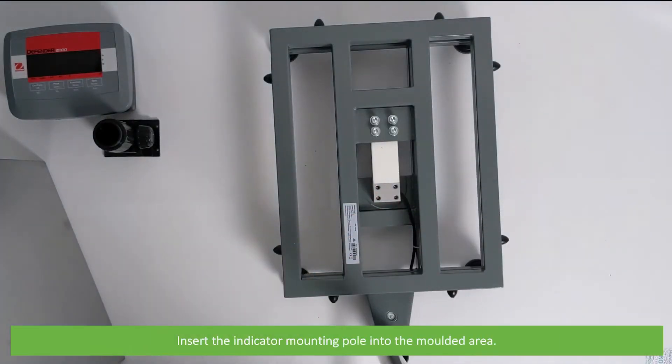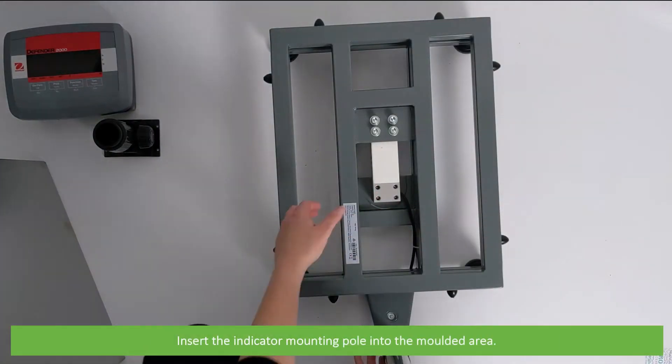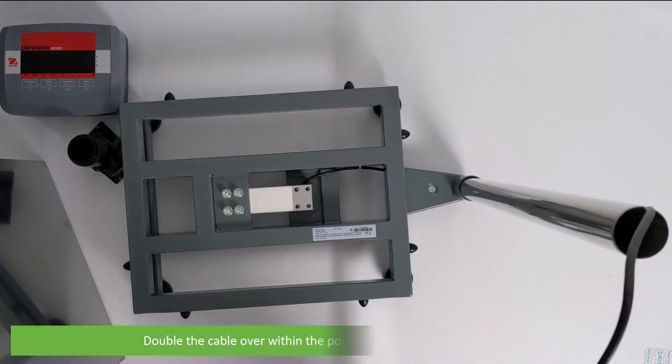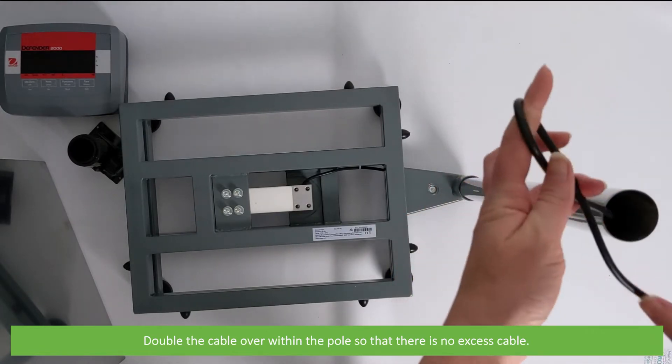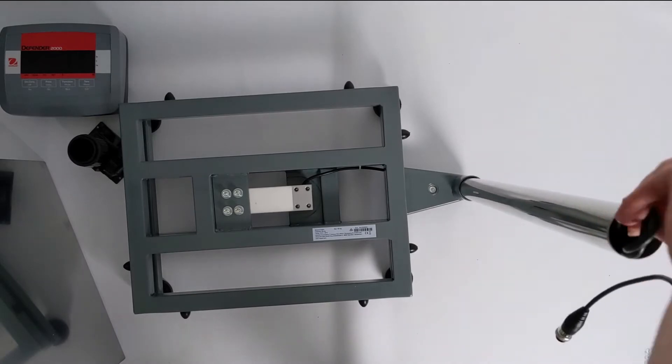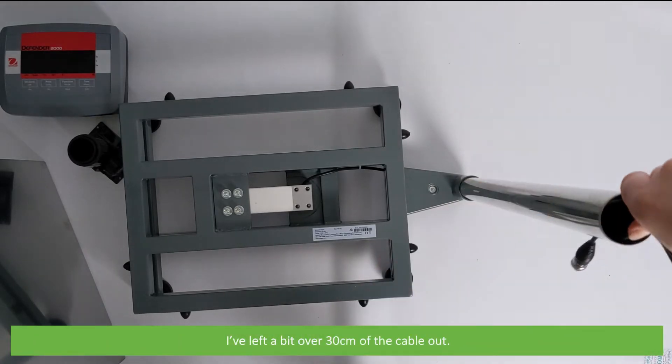Insert the indicator mounting pole into the moulded area. Double the cable over within the pole so that there is not excess cable. I've left around 30 centimeters of the cable out.